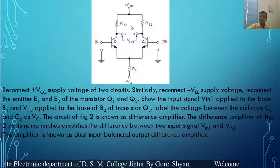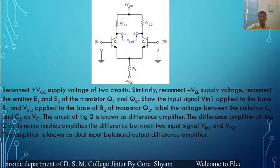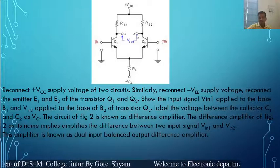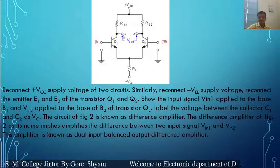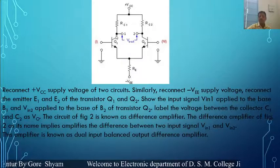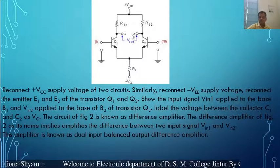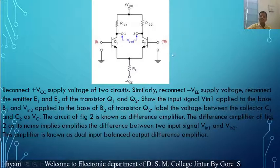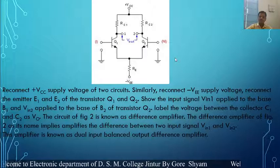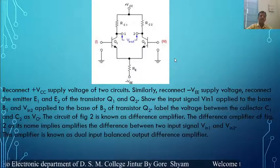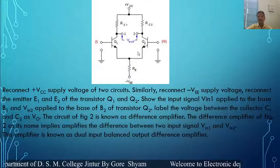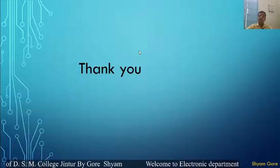The first combination is dual input balanced output — two inputs with output across both collectors. If only one input is used with output across both collectors, that is single input balanced output. This is the difference amplifier, and it amplifies the difference of the two input signals. Such types of difference amplifiers are used in the operational amplifier. Thank you for watching this video.